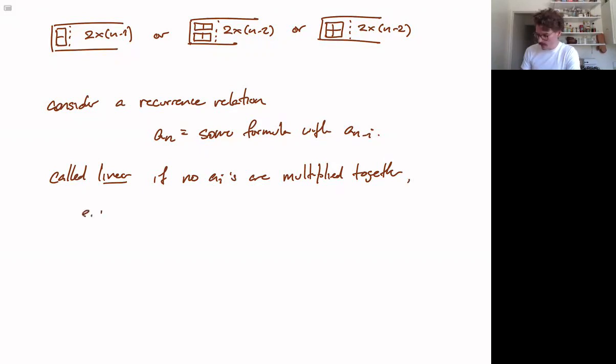For example, an equals 3n times an minus 1 plus an minus 3 plus n squared. This is an example of a linear recurrence. In particular, we're not saying that we can't multiply things by some a sub i. We're also not saying we can't have nonlinear terms that don't involve a sub i's. What we're saying is that these guys, there are nothing of this form that are multiplied together. These guys each get their own term in this relation.